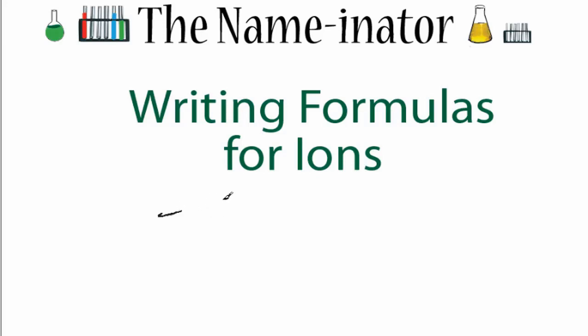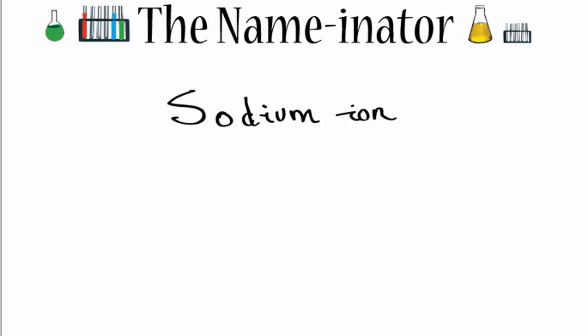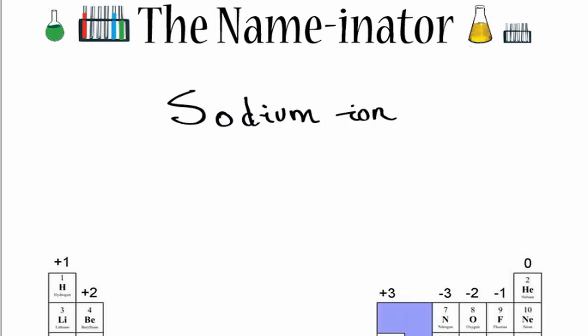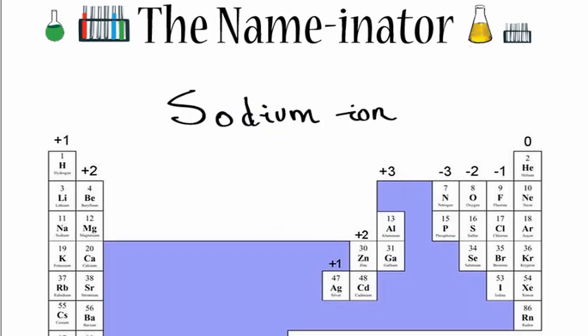We're going to look at how to write the formulas for ions when we're given the name of the ion. For example, if I'm given the sodium ion, I can look on the periodic table and find sodium, which is Na, but then I need to figure out what the charge is.